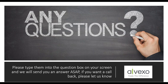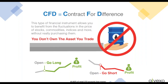When you trade with Alvexo, you are trading what's called a CFD — a contract for difference. This is a type of financial instrument that allows you to benefit from the fluctuations in price of stocks, commodities, and indices without really purchasing them. They're known as derivatives. Most of the things you buy, sell, or trade in the market today are derivatives. A derivative is simply something that derives its price from the actual market value.